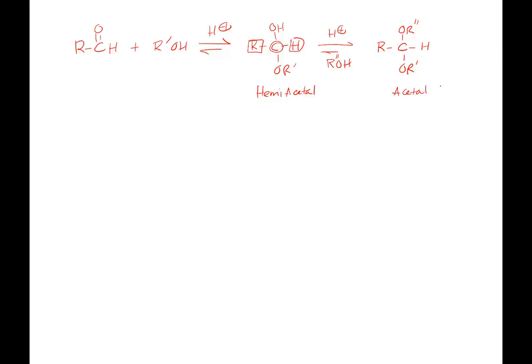Where does the equilibrium lie for this system? For hydrates, for most compounds, when we form a hydrate, the equilibrium lies on the reactants side. Only under certain circumstances can I push the equilibrium to form the hydrate. The same is true for aldehydes and ketones with alcohols — most of the equilibrium lies to the left, unless I make a cyclic product. If I make a cyclic product, the equilibrium will lie 100% to the right.